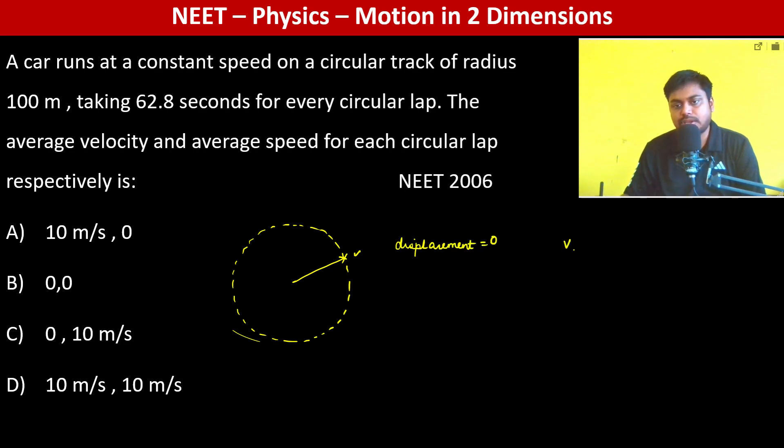Therefore, average velocity, which equals total displacement by total time, is going to be 0. And distance covered is going to be equal to 2πr.